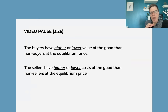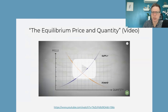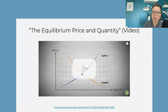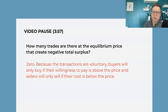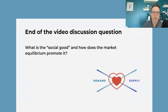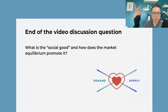What the video describes is one of the reasons why we like equilibrium: it takes us to the point where the buyers who buy it have a high willingness to pay, and the buyers that don't have a low willingness to pay — so it's the people that value the good the most that get it. The people that produce the good are the sellers with the lowest cost, not the sellers with high costs. And there's no negative total surplus because all the transactions are voluntary, so every transaction creates some positive surplus. In the video, what we're defining as the social good is total surplus — consumer surplus plus producer surplus.